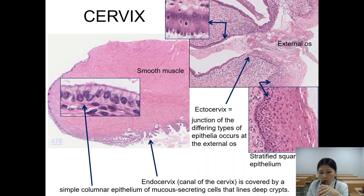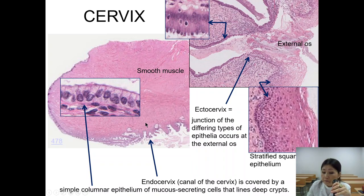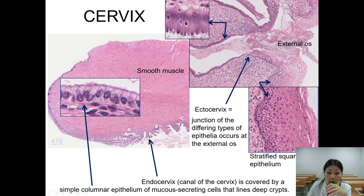Here the histological structure of the cervix is shown. You can see smooth muscle and the endocervix. The canal of the cervix is covered by a simple columnar epithelium of mucus-secreting cells that lines deep crypts — you can see these deep crypts here. This region is called the endocervix. The cervical canal is lined by simple columnar epithelium.